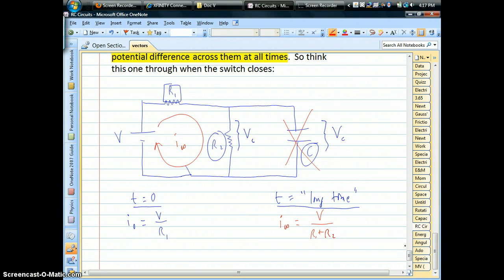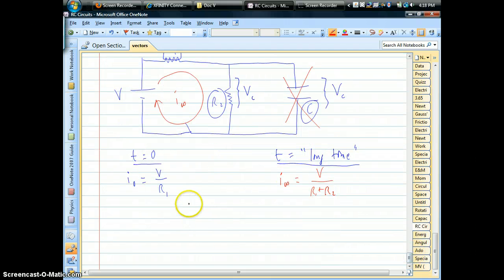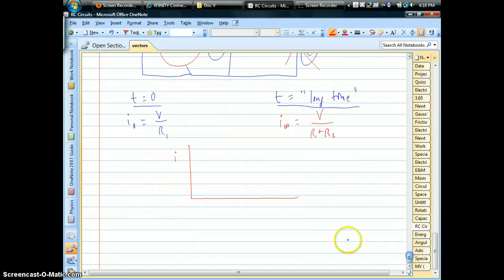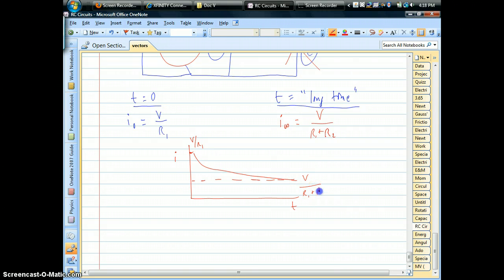Okay, so in the end, this is really what goes on. We have these two different currents. If we were to plot the current of the circuit as a function of time, it's going to start big, V over R1, and then it's eventually going to decrease, not to zero, but to the steady, smaller current of the battery divided by the total resistance, R1 plus R2.